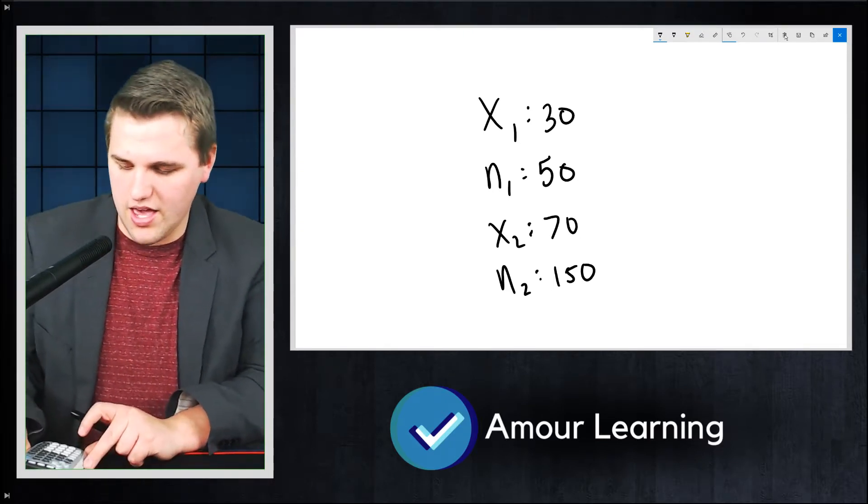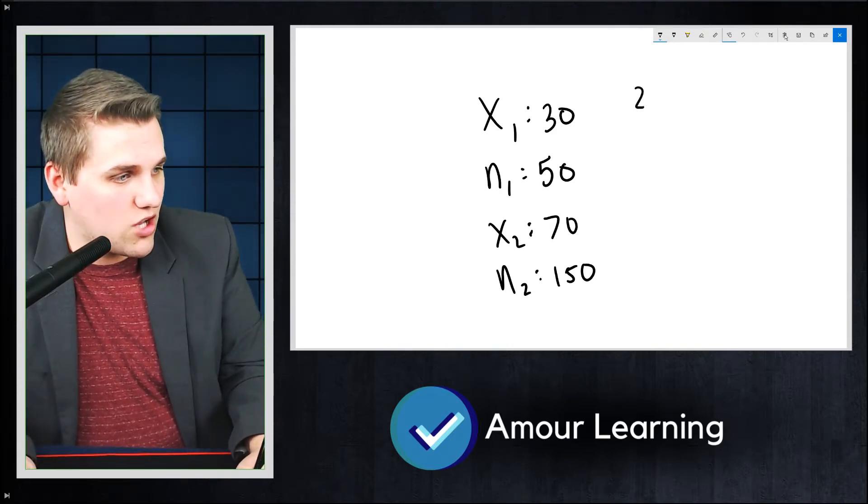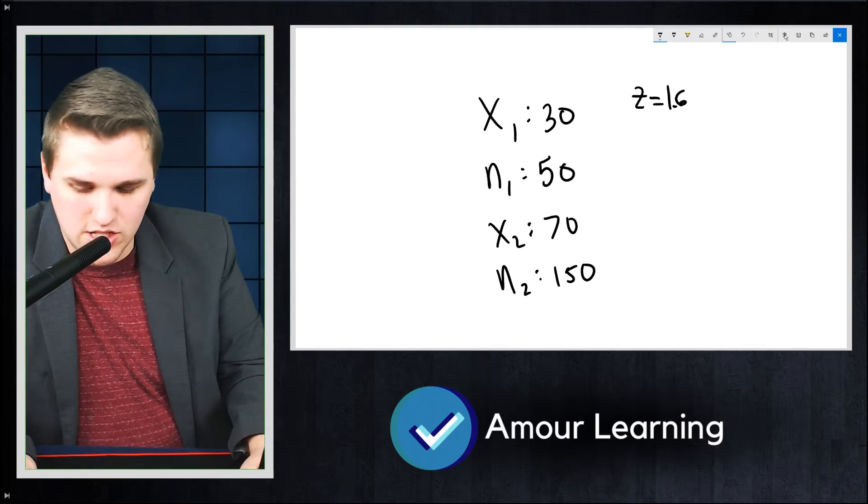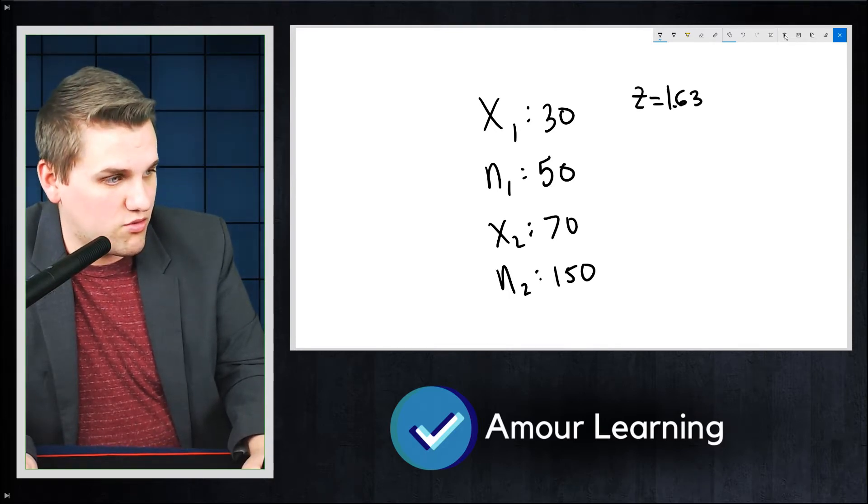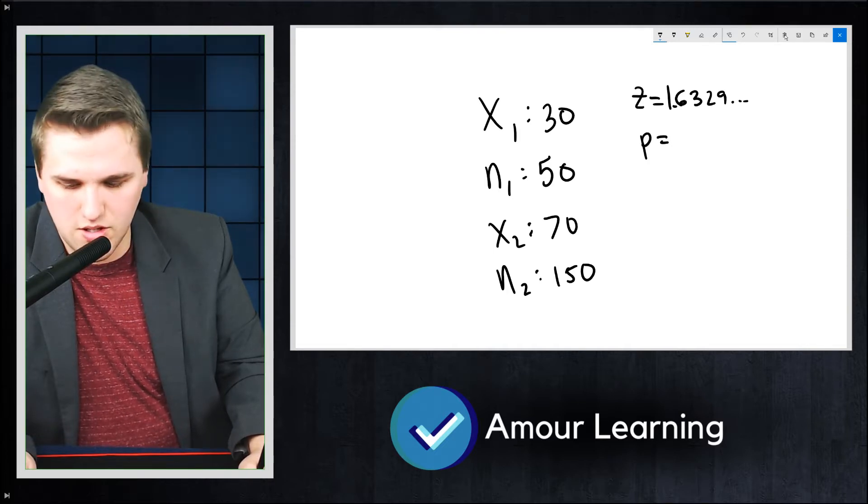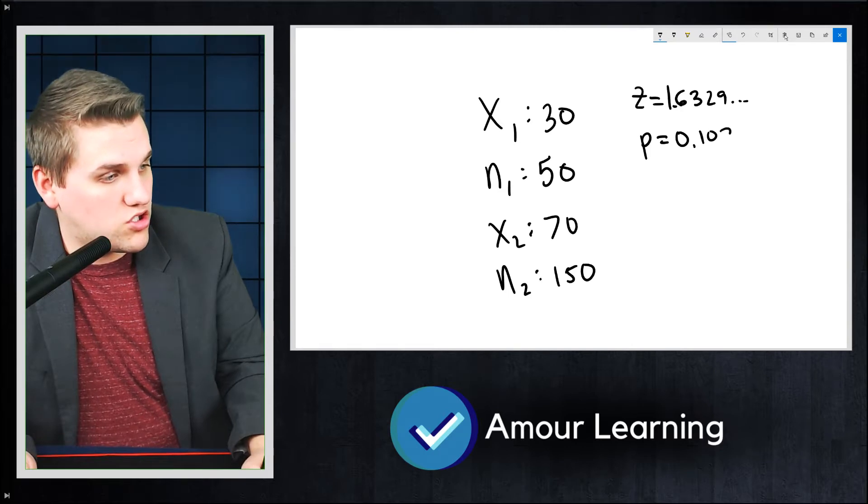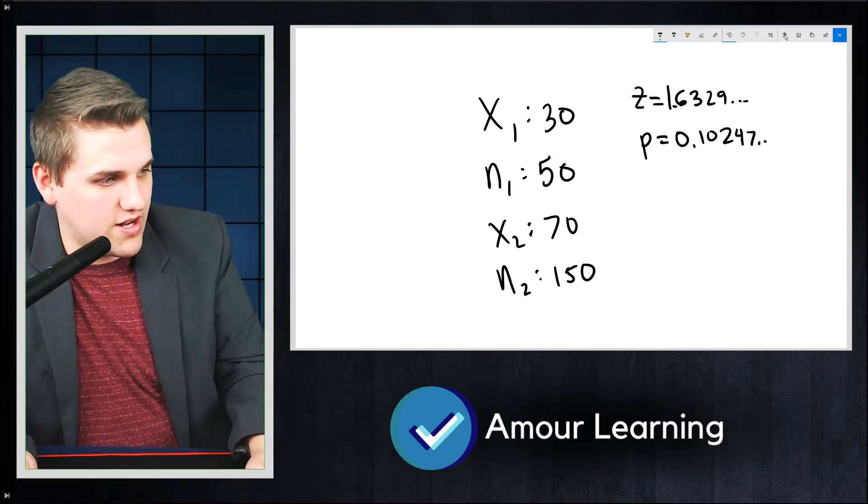And now I'm going to calculate. I'm going to write down the results that I get. We get Z equals 1.6333299, and so on. And you get P equals 0.10247, and so on.